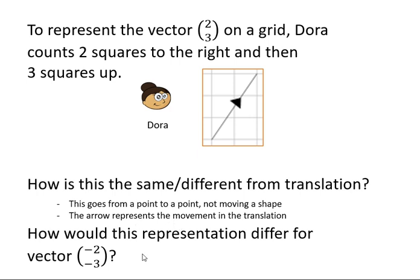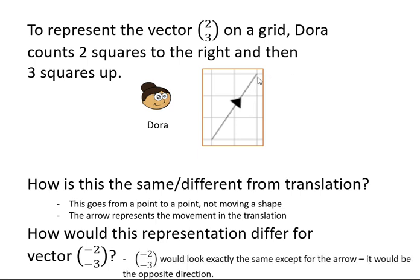How would this representation differ for vector (-2,-3)? Well, as we saw in the previous slide, (2,3) changing to (-2,-3) should go in the opposite direction. Therefore, it would look exactly the same as this, except the arrow would be in the opposite direction. It would go from here to here rather than here to here.